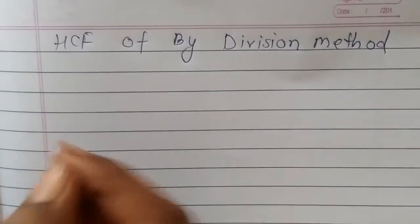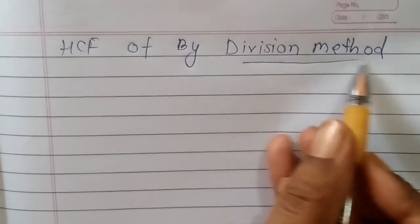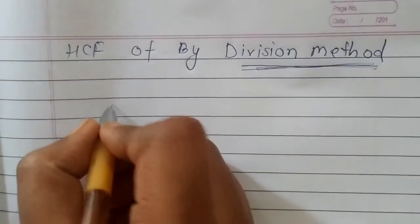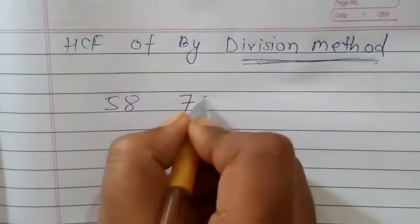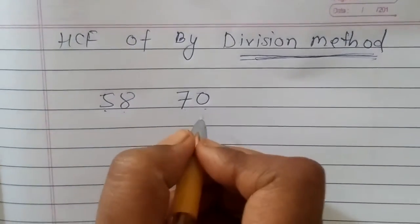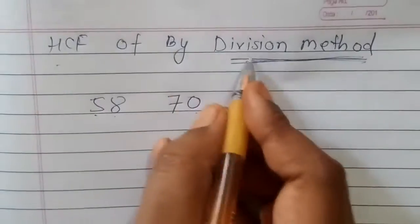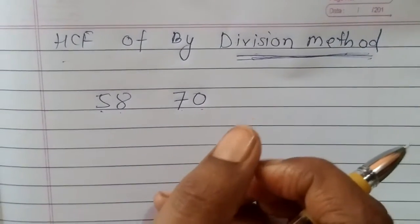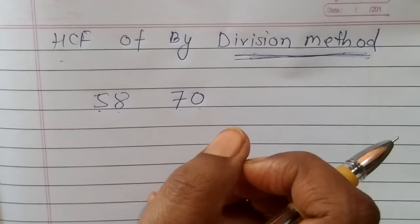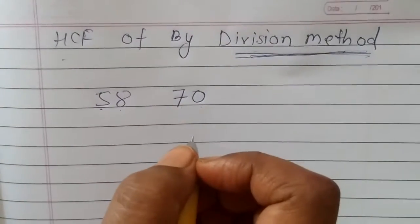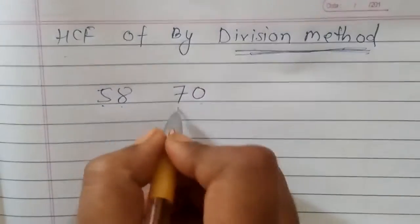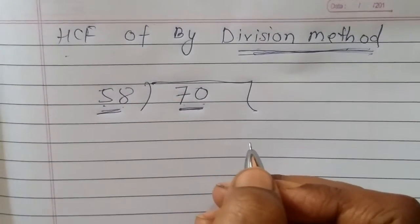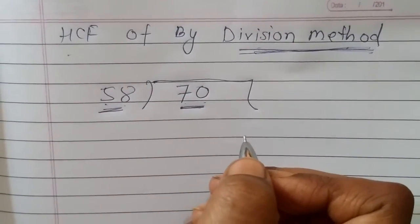Next question: HCF by division method. हम यहाँ division method से HCF find out करेंगे। 58 और 70 का HCF निकालना है by division method। तो यहाँ पर क्या करेंगे — divide the greater number by the smaller number.